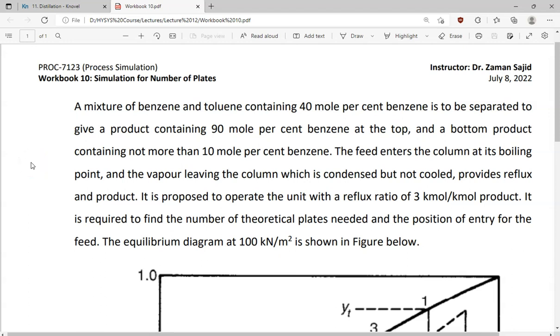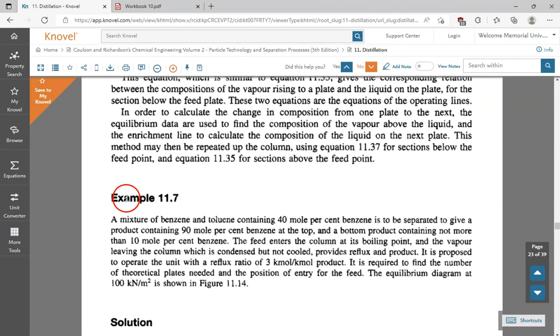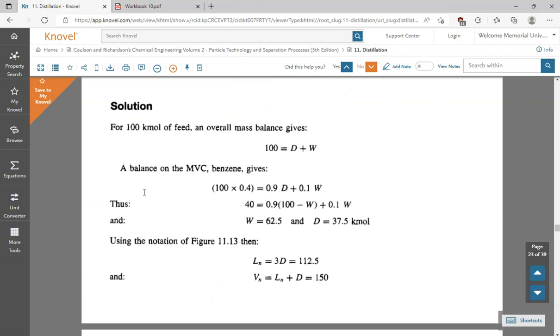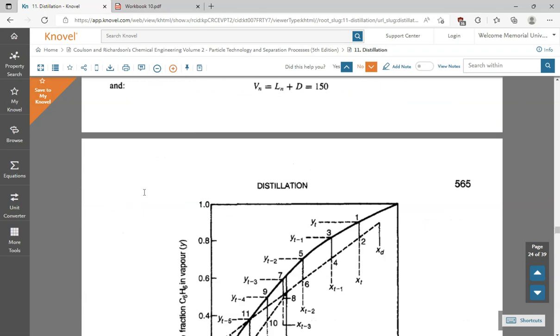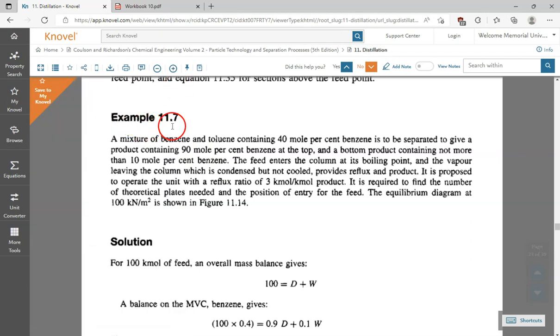Hello everyone, I'm going to show you how we find the number of plates in ASPEN HYSYS, and I will be using this example to elaborate how we simulate a shortcut distillation column in HYSYS. Before I jump into the example, I just want to provide the reference. This example I adopted from example 11.7, which is the theoretical solution, and the reference is adopted from Richardson and Coulson Chemical Engineering Volume 2, Particle Technology and Separation Processes, fifth edition, example 11.7.